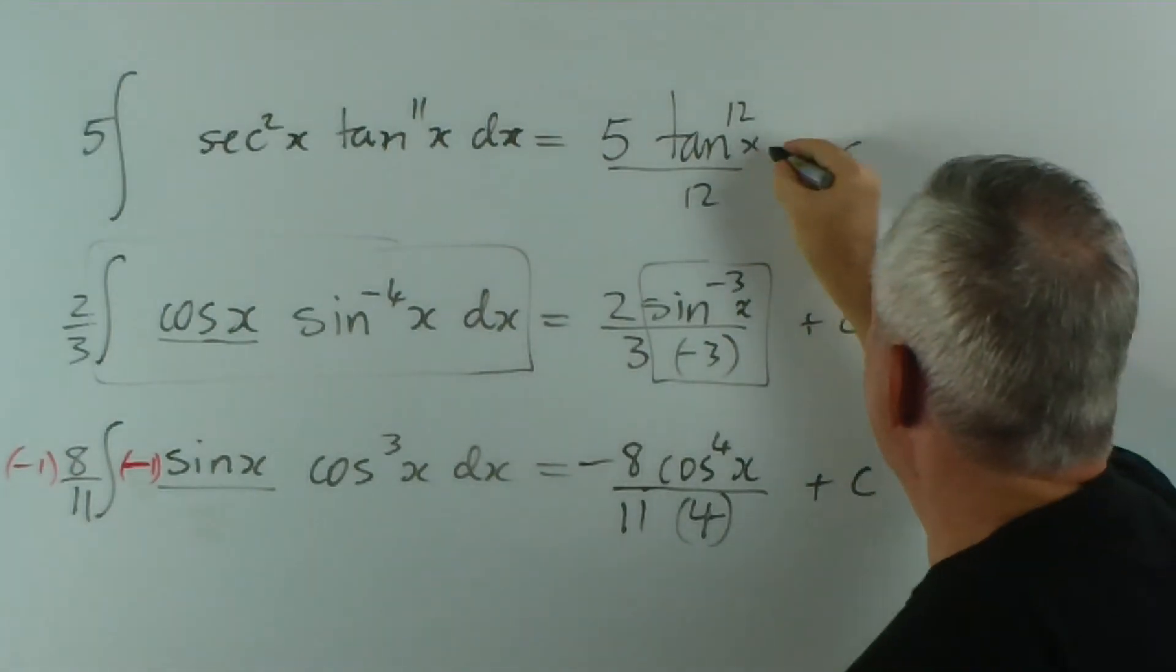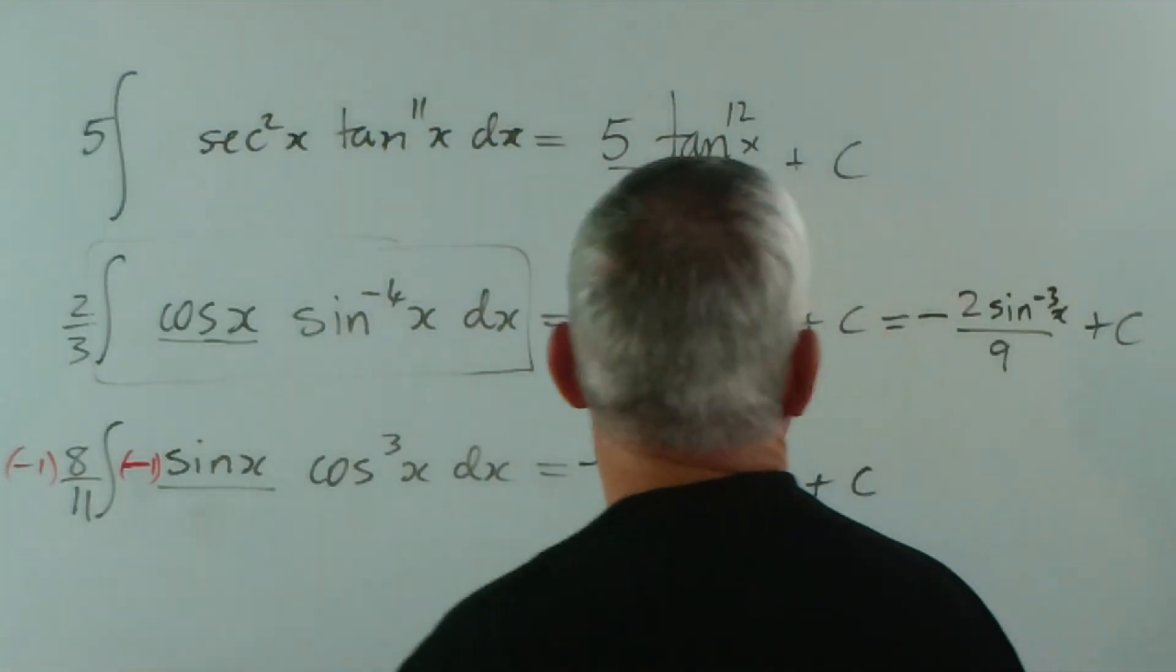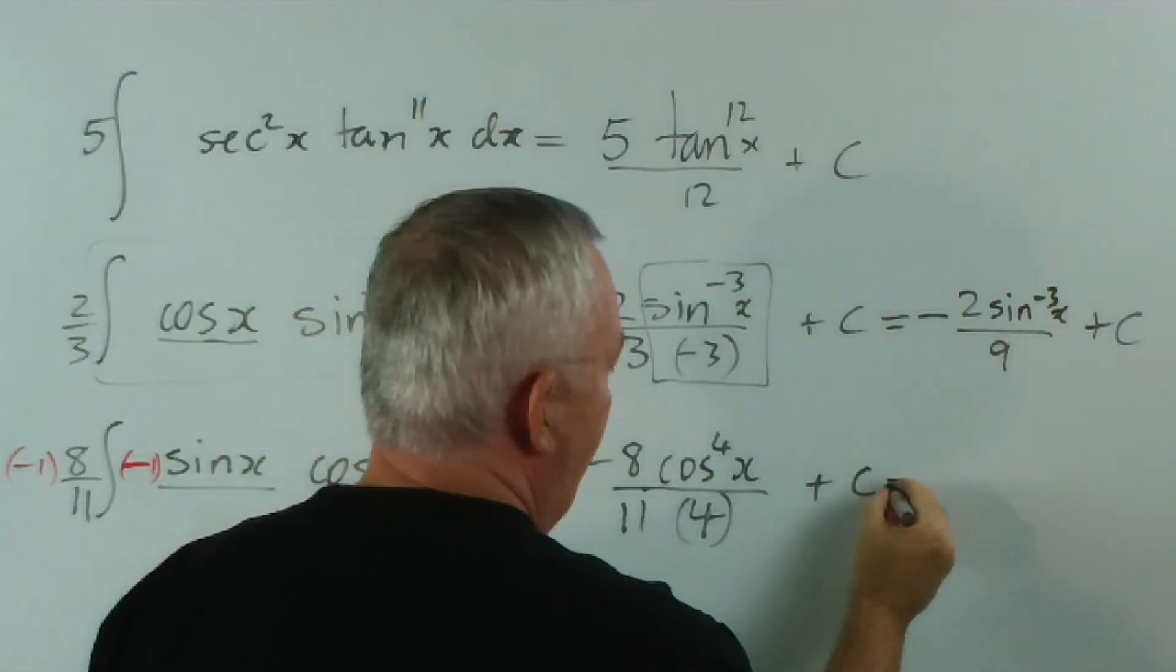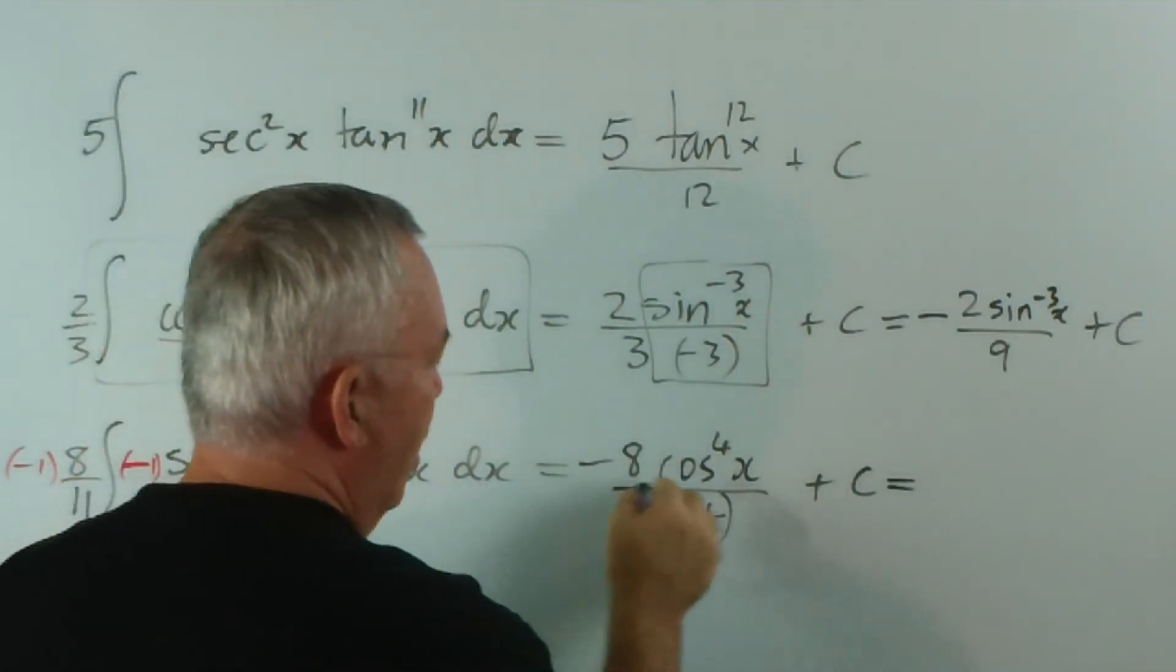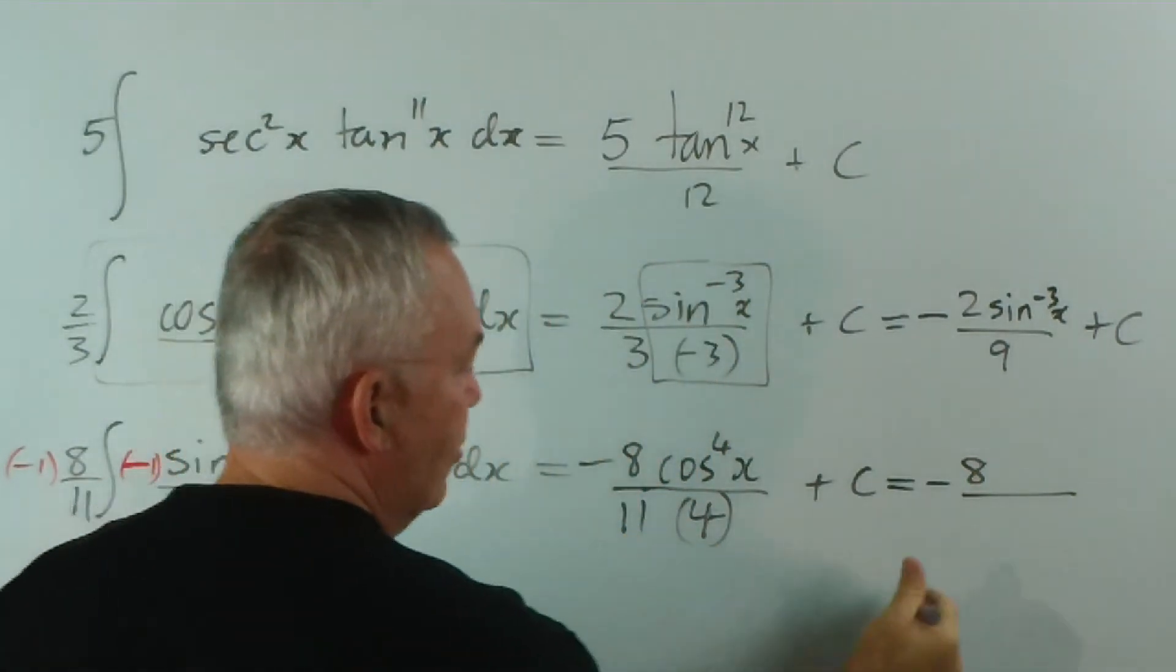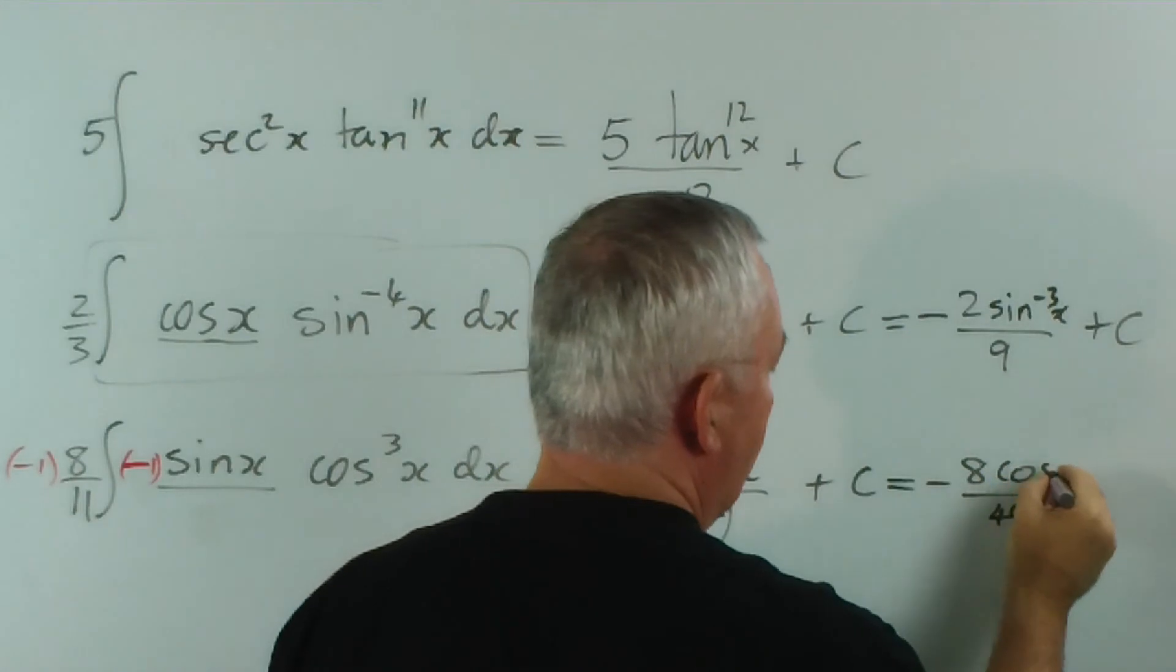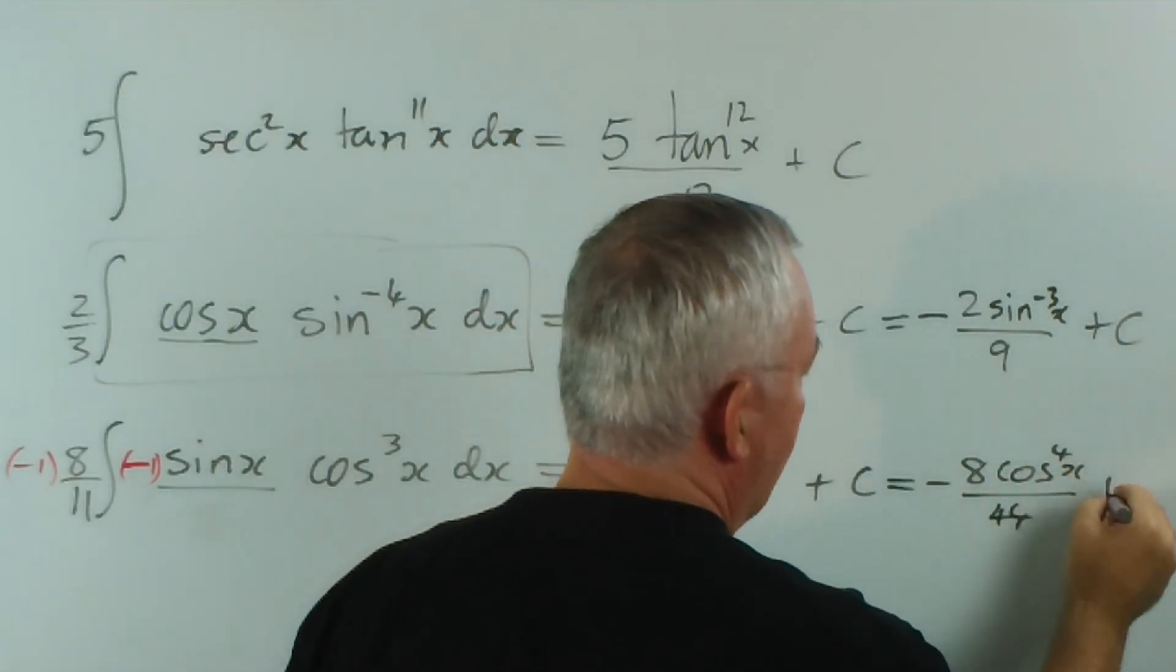You didn't tell me about this. I'm being lazy. I think I'm not sure what's happening today. This one here, minus 8, I'll leave the minus out the front. Eleven times four is forty-four. And we've got cos to the power 4 x plus c.